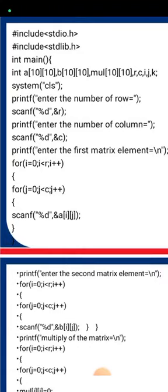After entering the first matrix elements, we input the second matrix elements using the same procedure. Again a nested for loop is used: outer loop for i from 0 to less than r, inner loop for j from 0 to less than c. Inside the loop, scanf reads each element into b[i][j].